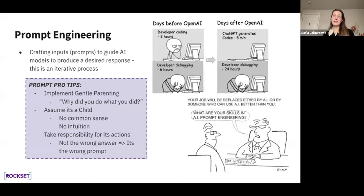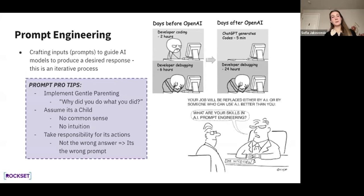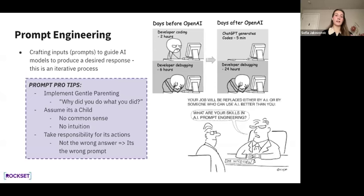Second pro tip: assume it's a child. Your custom GPT has no common sense and no intuition — you must be explicit and may have to repeat things multiple times for it to actually listen. Third: take responsibility for its actions. Shift your mindset from 'this is the wrong answer' to 'I'm giving the wrong prompt.' Your custom GPT is only going to be as good as your prompt engineering. Instead of saying it's not working, try to figure out how you can adjust your prompt to get the results you're looking for.